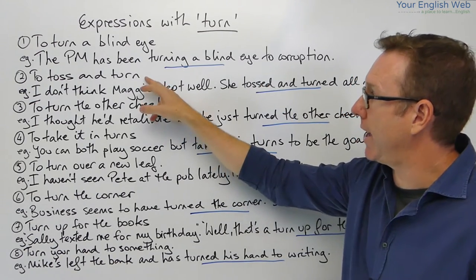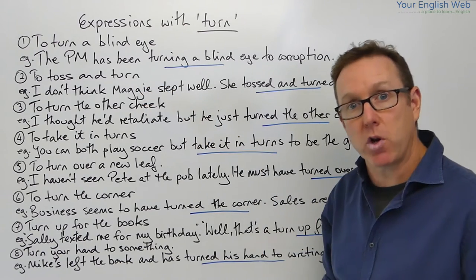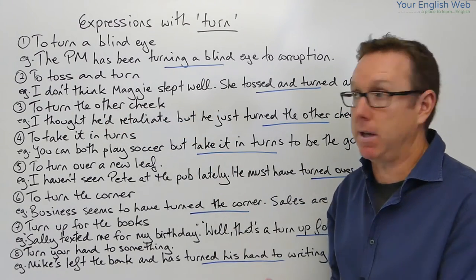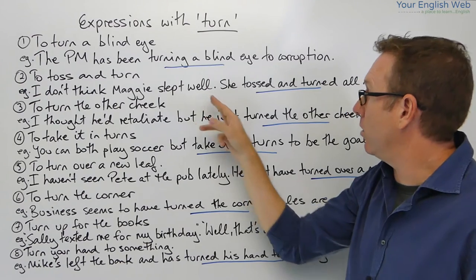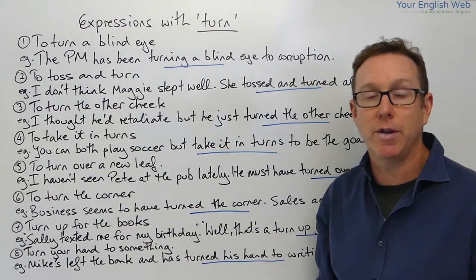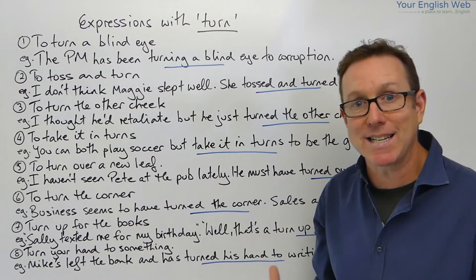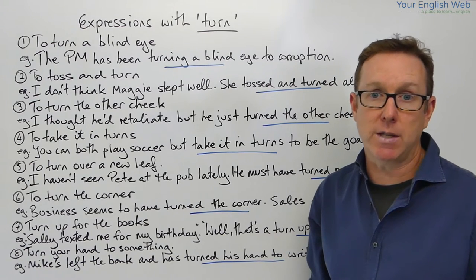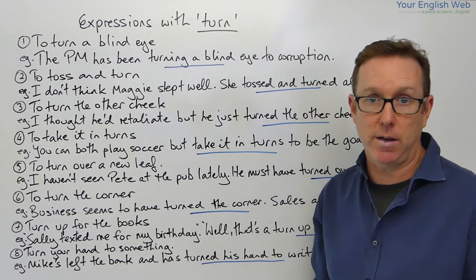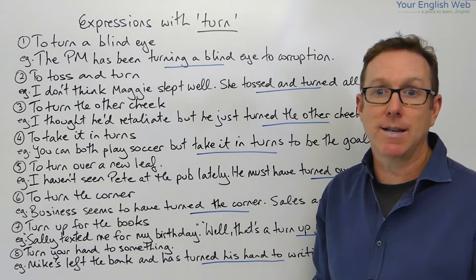The next one is to toss and turn. Again through context: I don't think Maggie — Maggie the baby — slept well. She tossed and turned all night. What this means is that she didn't sleep very well. She was very restless last night when she was sleeping — she was moving a lot in bed, tossing and turning.